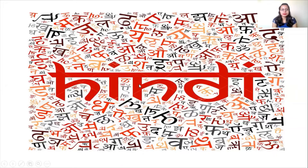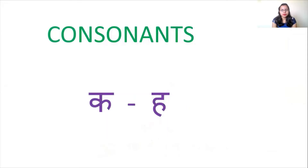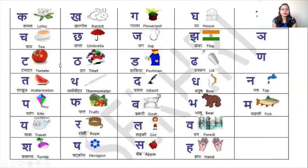In today's Hindi class, you all know that we are still doing alphabets. Alphabets are divided into two parts: vowels and consonants. We are doing consonants, which are letters from 'ga' to 'ha'. There are many letters in between. Some of the letters we have already completed up to 'ma'.